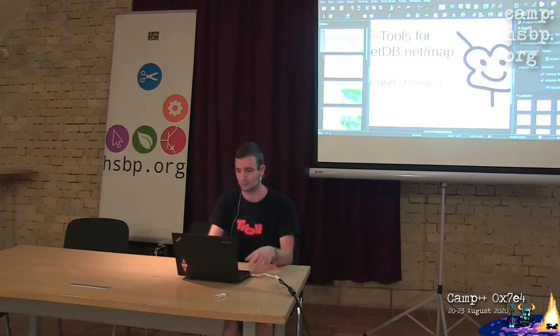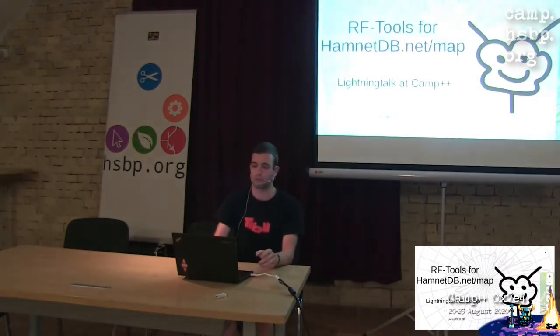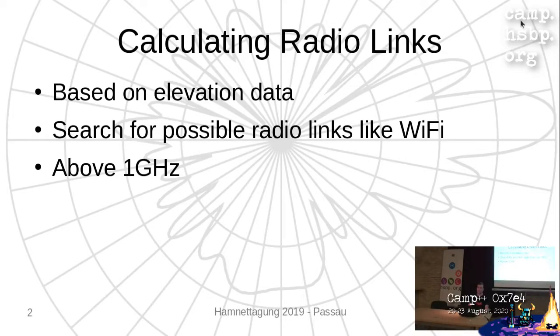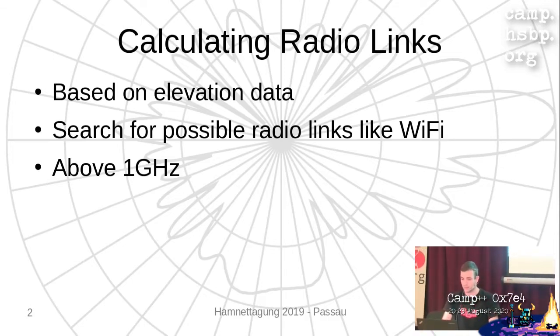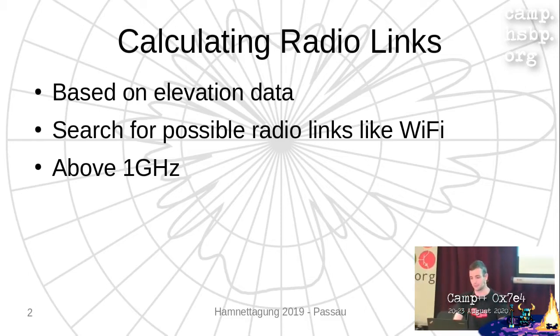Two years ago I made a talk here about Hamnet — you can watch it online, not that great but you'll get an impression. We have RF tools to calculate radio links between different positions based on elevation data from the globe, and to search for possible radio links like Wi-Fi for frequencies above 1 GHz. Since then some things have changed. This talk is recycled from an event last year but I translated it in the last few minutes, so please excuse any German words still left in.